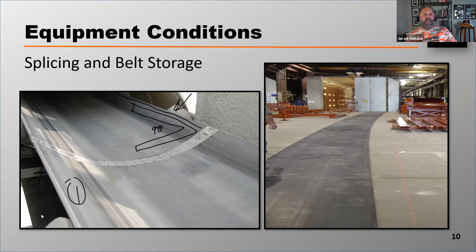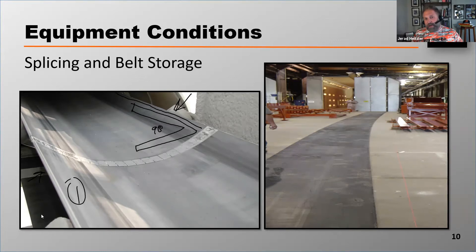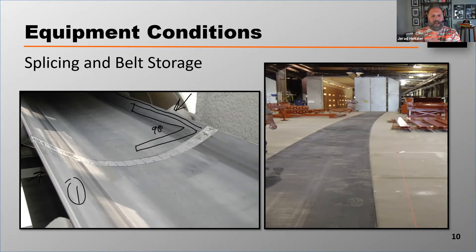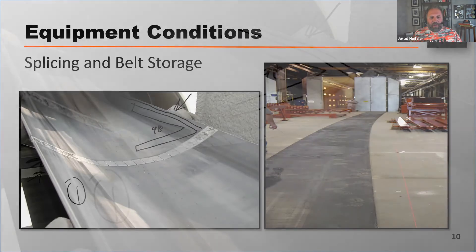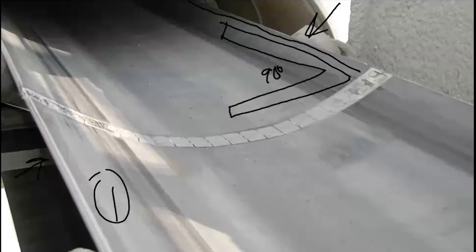You can identify a crooked splice by standing at a tail pulley and watching the belt. Then all of a sudden that splice comes through and you see the belt jump very quickly to one side and jump back. That's a crooked splice. That happens because they've squared off the edge of the belt.